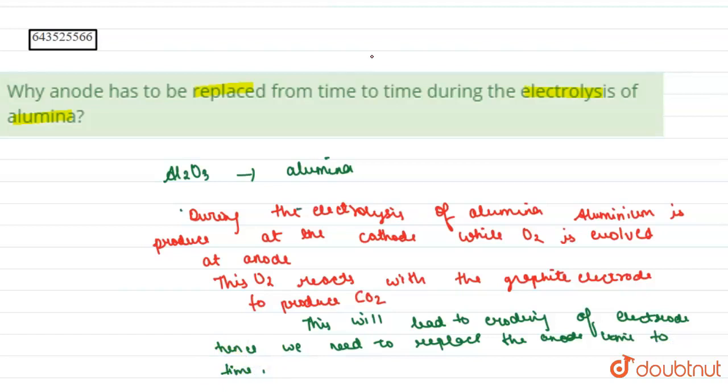The oxygen produced is continuously reacting with the graphite to produce CO2 gas. Hence we need to change the anode from time to time because it is eroding. That is the reason we are replacing anode during the electrolysis of alumina - the anode is continuously eroding due to oxygen reacting with the graphite of the electrode to produce carbon dioxide gas.